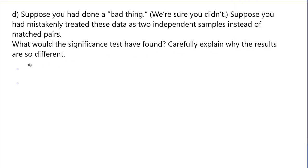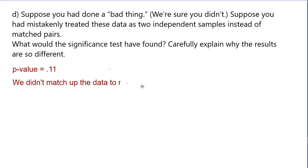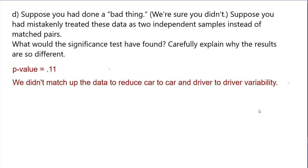Explain why the results are so different. The P-value was 11% because we didn't match the data to reduce the car-to-car, driver-to-driver variability. When we can match it and defend the paired data assumption, we always want to do it because it gives us much more powerful results.